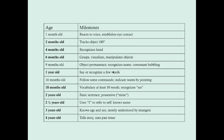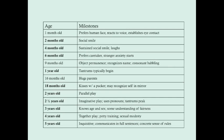If the baby says something more complex like 'no' or 'milk,' that's certainly a word. By one year of age, they should be able to say a few words, and vocabulary rapidly develops especially between one and three years of age.